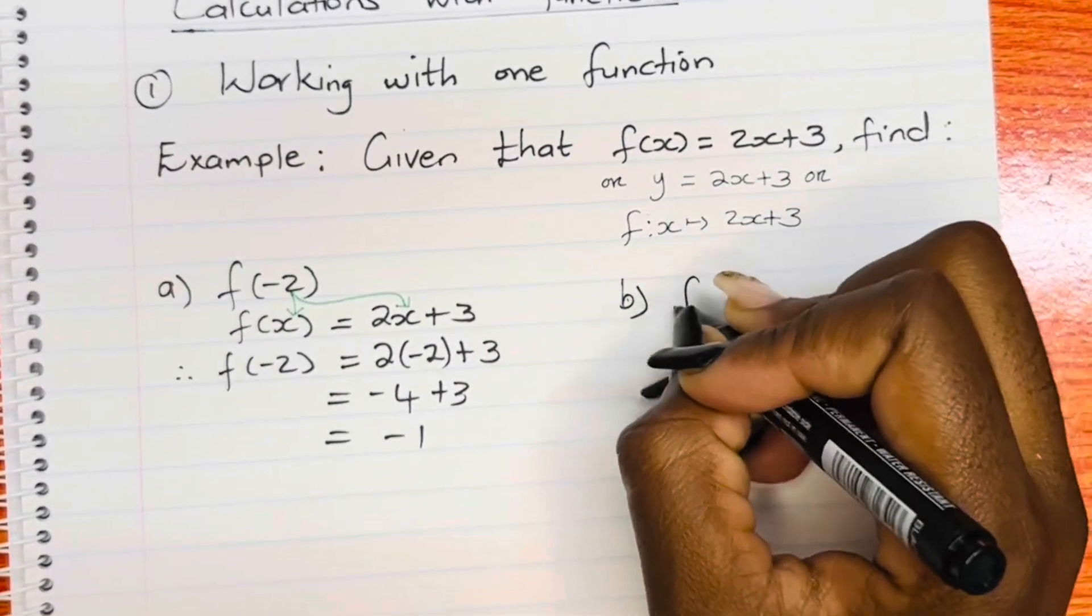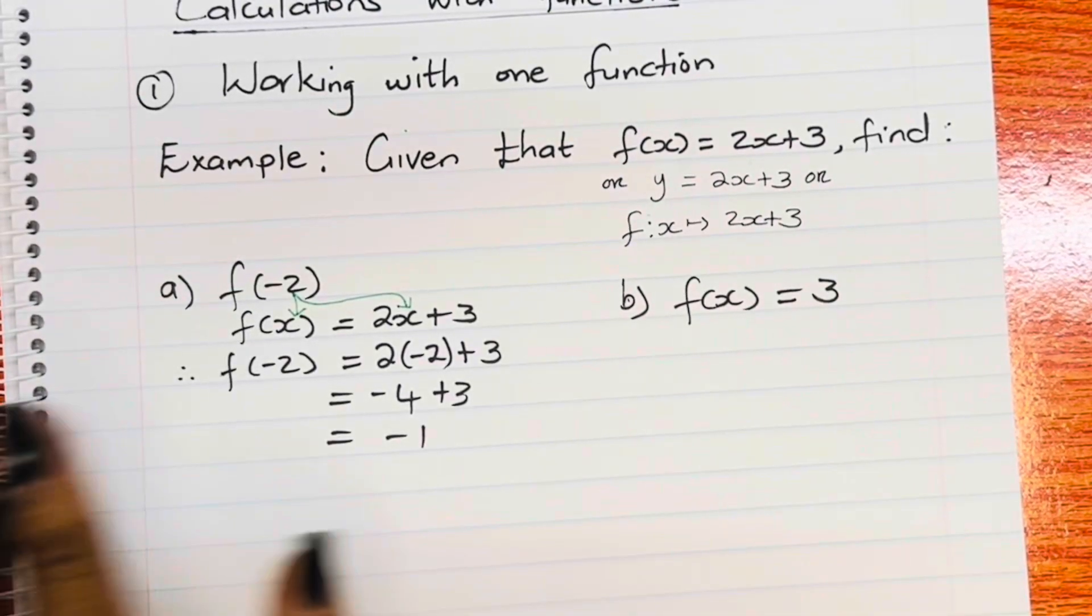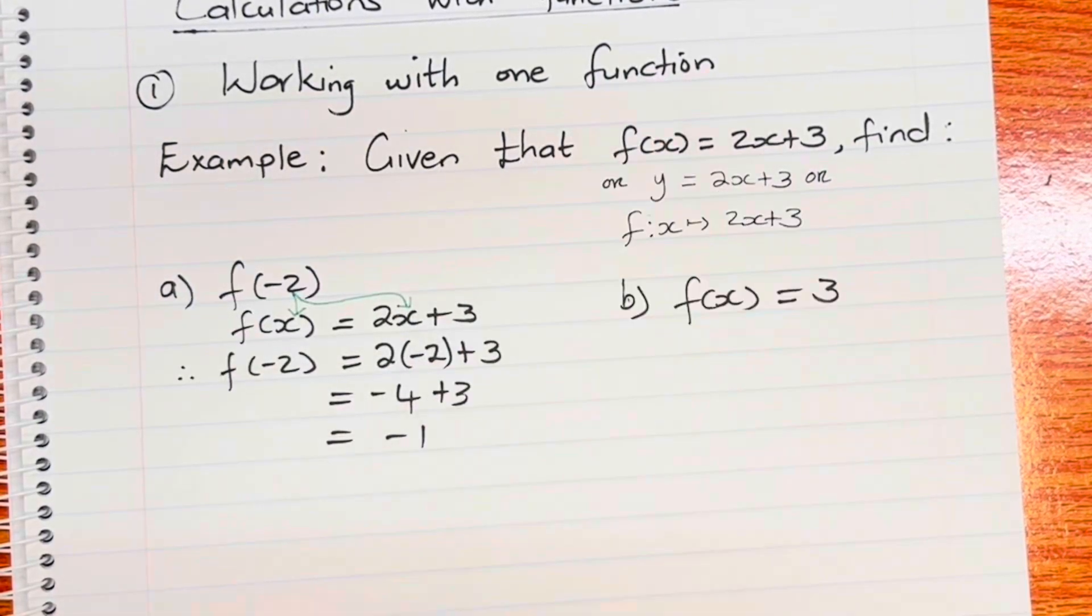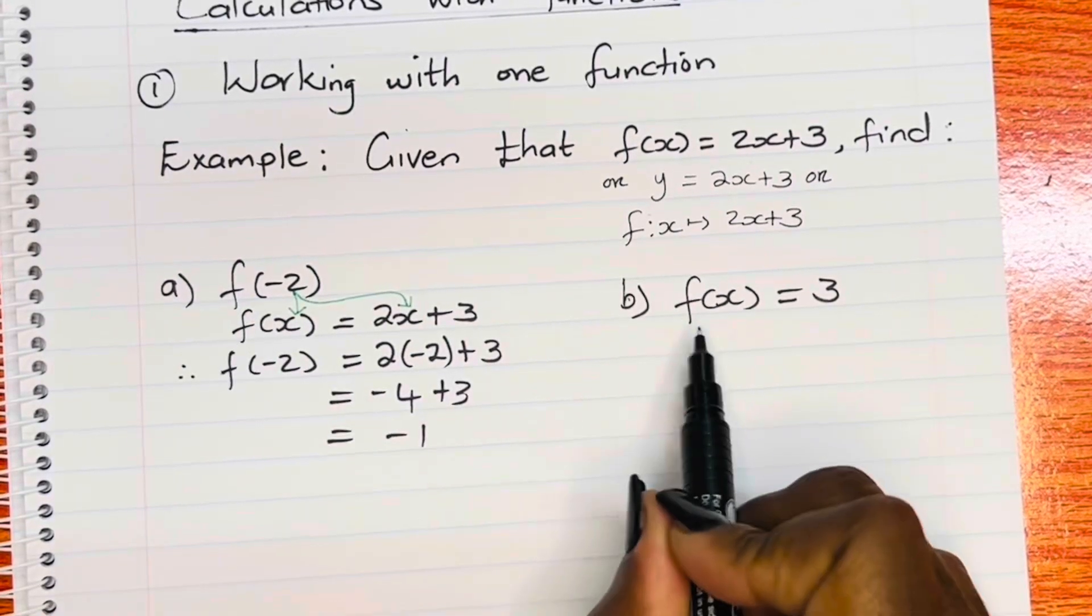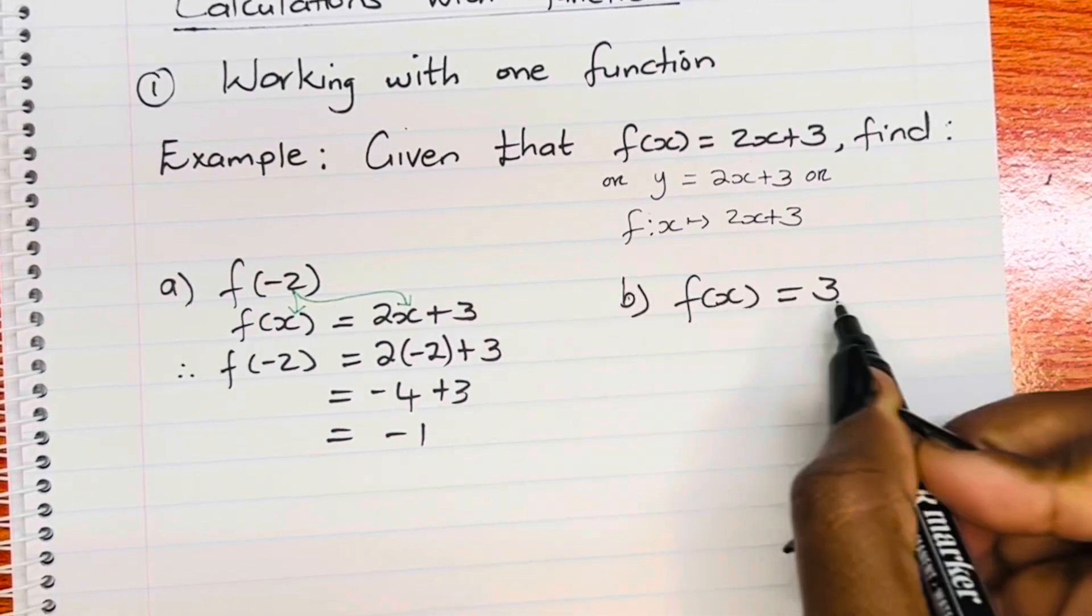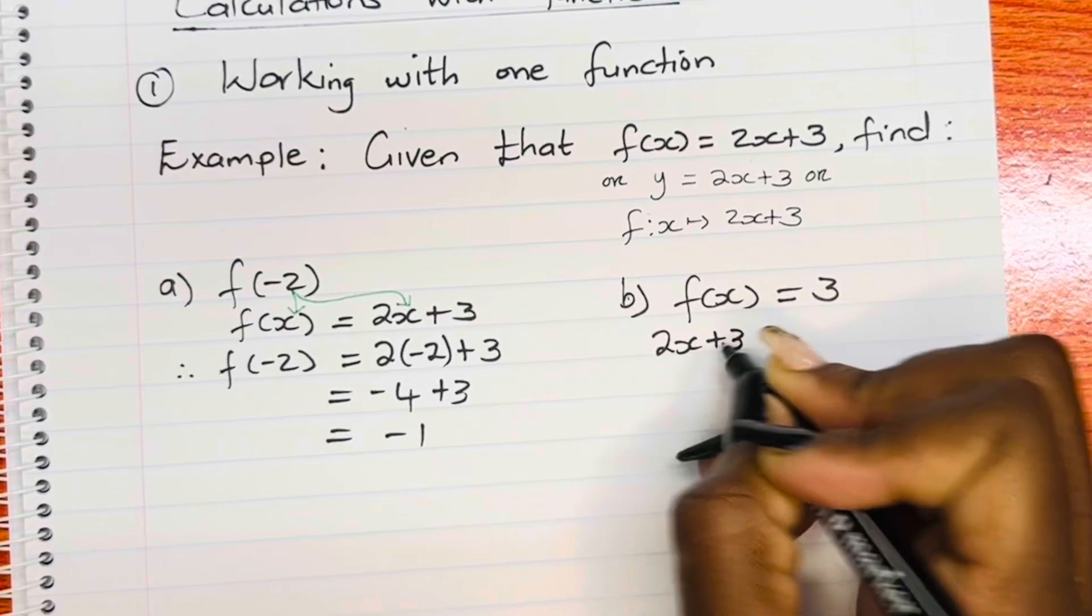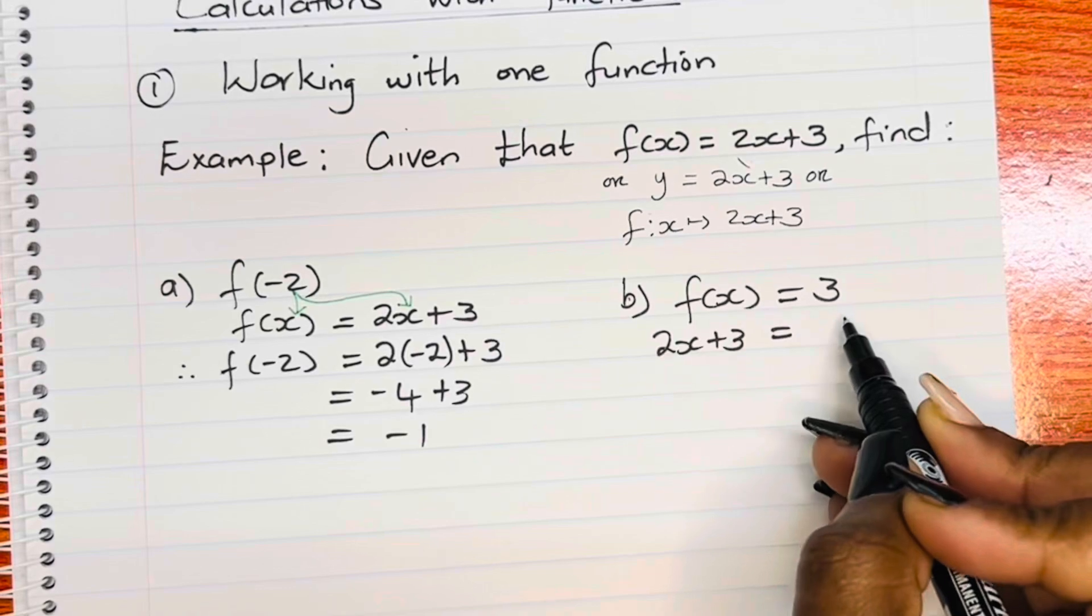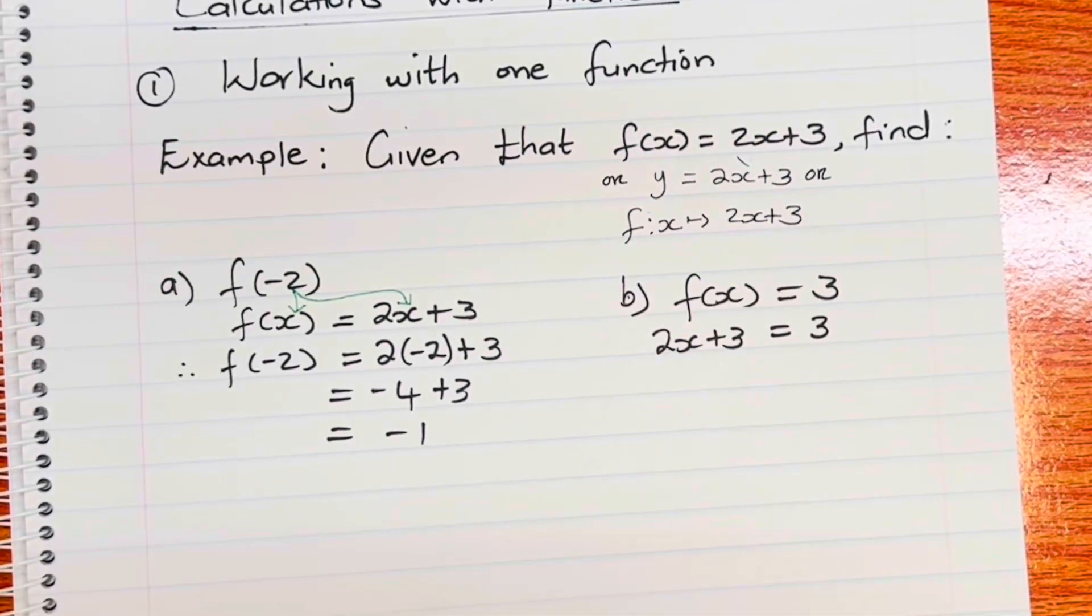The second kind of question that you can expect is f of x equal to 3. This is when they make the function equal to a number. So remember, we are working with one function. So either you are given a number to replace x, or perhaps they make the function equal to a number. So what does this mean then? So the function, which is now, in this case, f of x, which is 2x plus 3, is made equal to 3. So you're just replacing f of x with what it's equal to, and then you say equal to 3, since you are told that f of x is equal to 3.